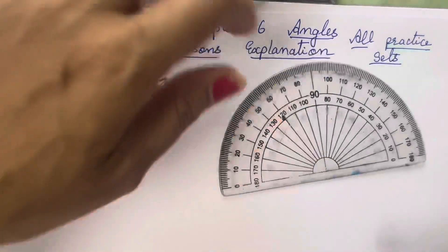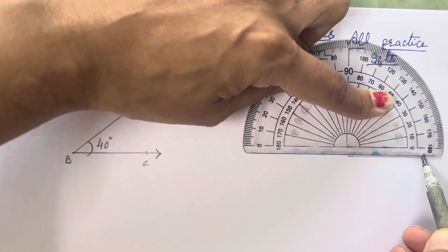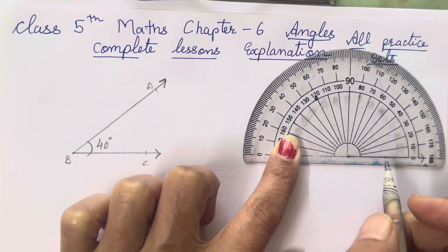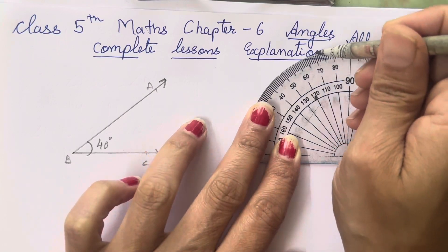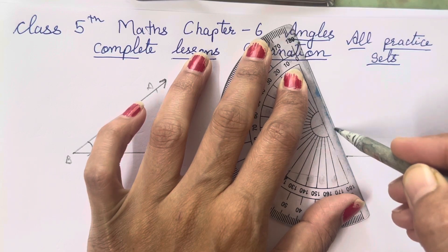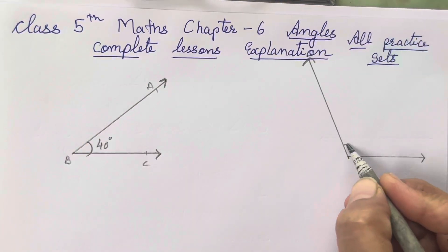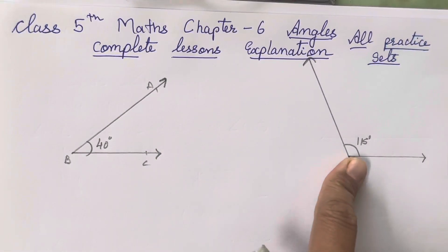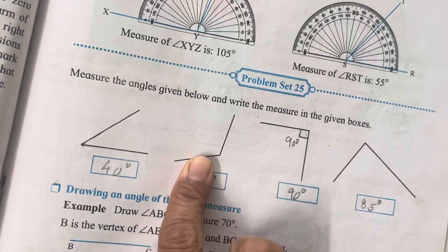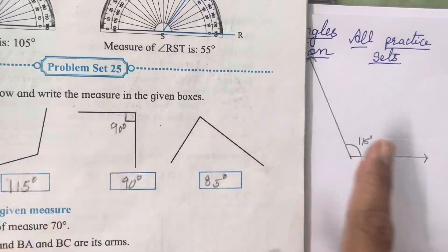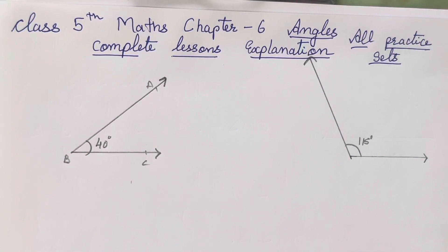Next is 115 degrees. Draw the base first, place the center point, align zero degrees along the straight line, and take the inside numbers — mark at 115 degrees. I recommend drawing it in a straight way rather than the angled orientation shown in the textbook, especially the first time you're drawing angles. Both orientations give the same 115 degree angle.